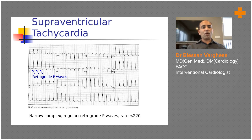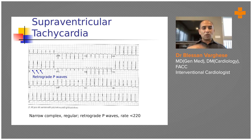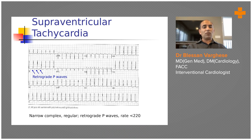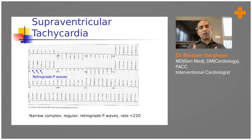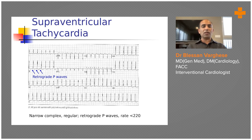This ECG shows supraventricular tachycardia, one of the commonest ECGs seen with tachycardia. The hallmark of SVT is a very regular rate — typically 170 to 190 bpm — that barely varies, due to the AV nodal re-entry mechanism. You will see an inverted P wave at the end of the QRS complex, appearing as a pseudo-S wave in inferior leads and a pseudo-R' in V1. This is AVNRT — AV nodal re-entry tachycardia — treated with IV adenosine bolus, which produces rapid reversion. It is a harmless arrhythmia.